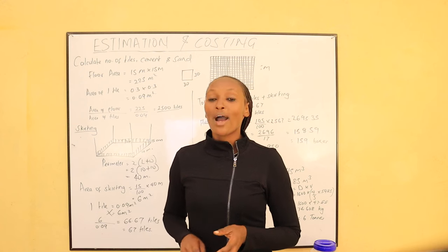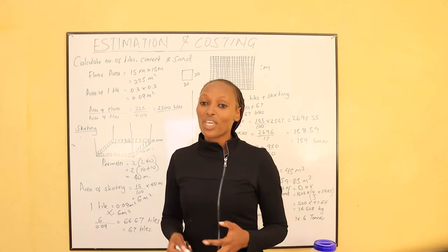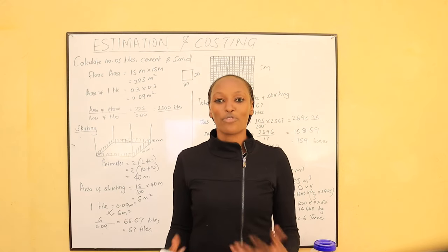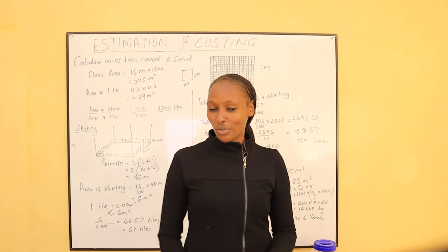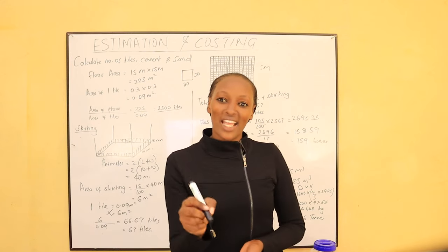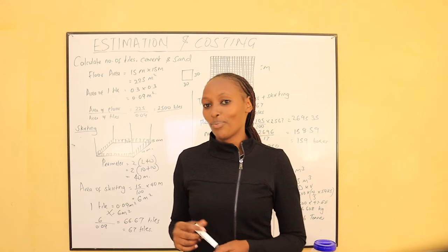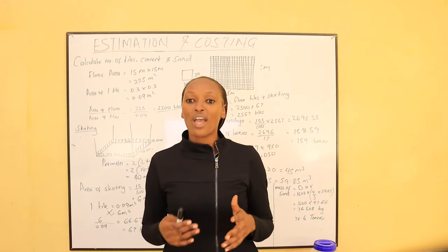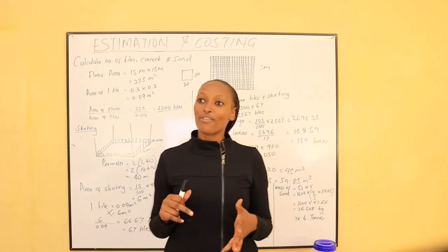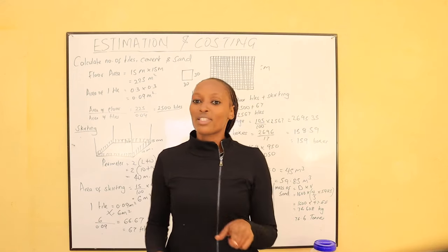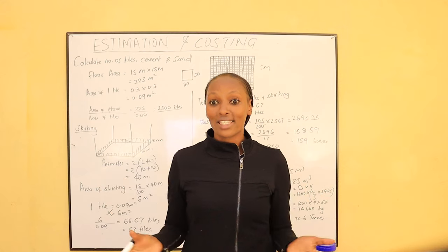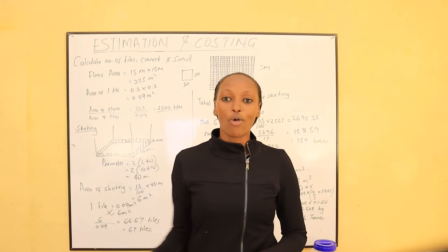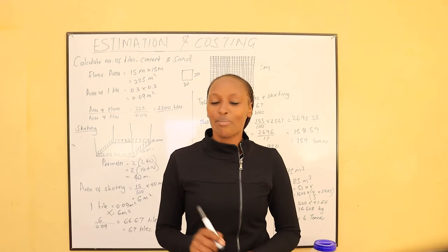Tiling is the process of placing tiles on the floor as a floor finish. Tiles are bought in boxes. They come in different sizes — 30cm by 30cm, 45cm by 45cm, 60cm by 60cm, and many more. In today's video, we will be calculating the number of boxes of tiles when using the most common tile, which is the 30 by 30 centimeter tile.